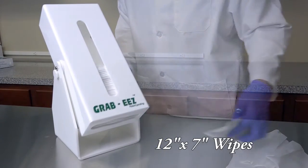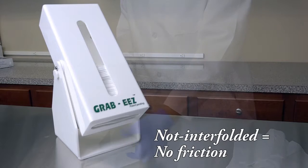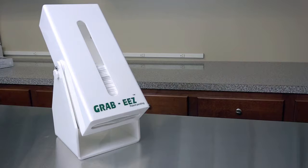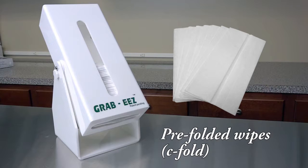The wipes are 12 inches by 7 inches, are not interfolded, so there is no damaging friction between wipes. Also, in most cases, the proper way to use a wipe is to use it folded. Grabby's wipes are pre-folded.